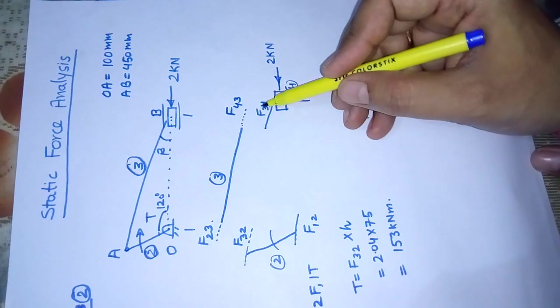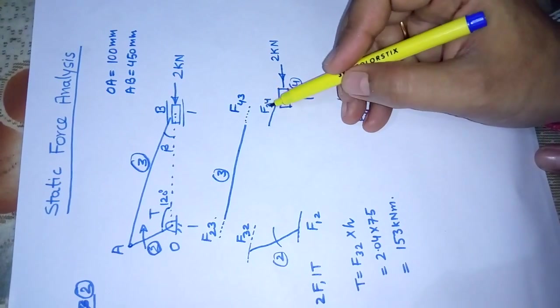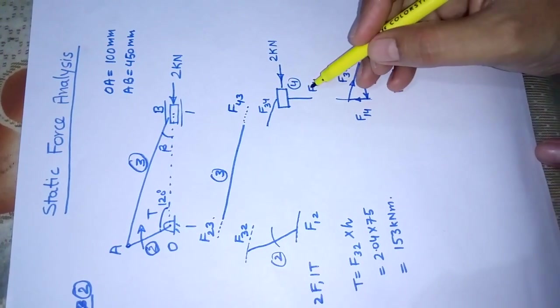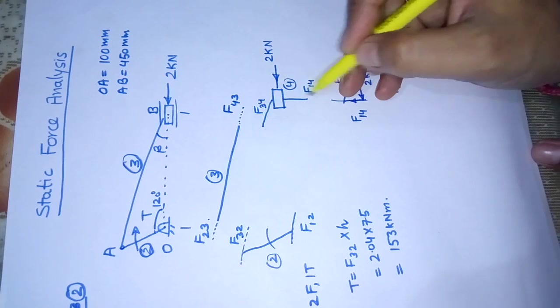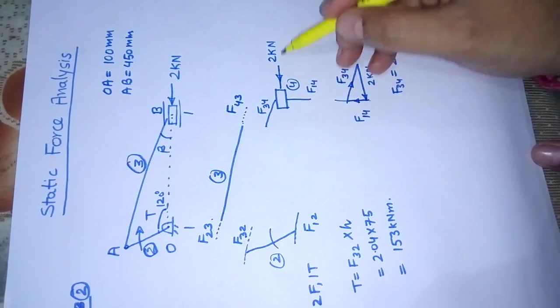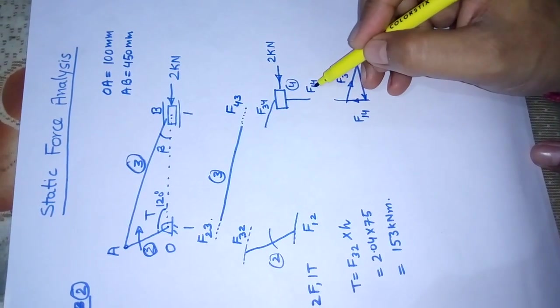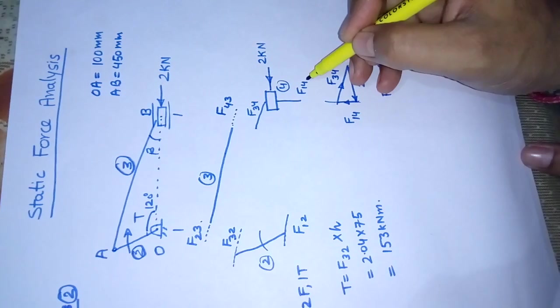It is written as F34, equal and opposite to F43 as per Newton's third law. And one force is perpendicular to the axis of translation, F14, because of the fixed link.